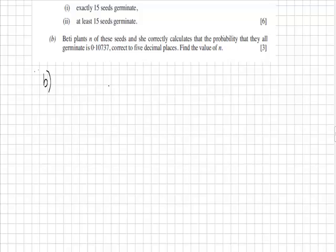If they all germinate, that would be seed number 1 germinating, and seed number 2, and seed number 3. And the probability of that would be 0.8 times 0.8 times 0.8, N times, which we could write as 0.8 to the power N.